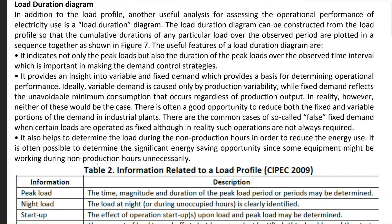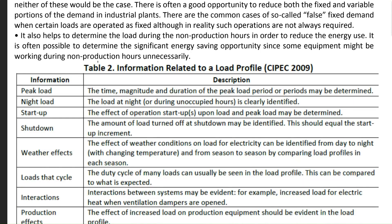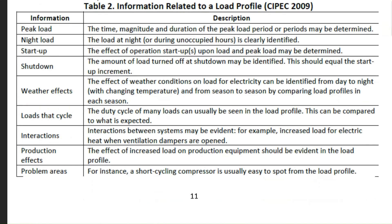First, we will categorically define the constituents of the daily load-profile diagram. The peak load is that load in which the load is maximum. Generally, single-shift operating industries have the peak load at the same time. Next is the night load — the compositions of night load include street lights if we are talking of the electricity board's daily load profile, other essential equipment, and also industries operating in three shifts where night load will be counted effectively.